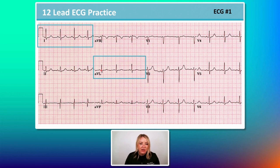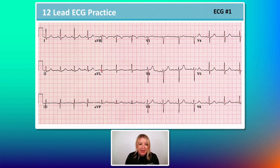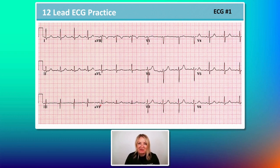This is a normal 12-lead ECG. I do not see any axis deviation. Lead 1 is upright, lead AVF is upright — so this looks normal.